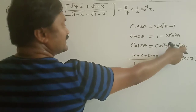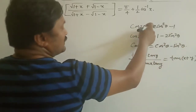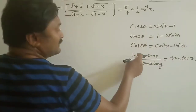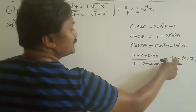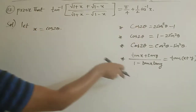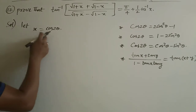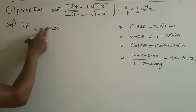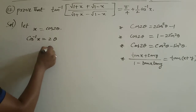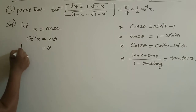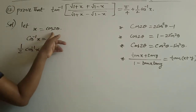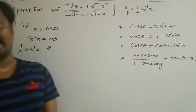Also remember: (tanx + tany)/(1 - tanx·tany) = tan(x+y). Now with x = cos2θ, we get cos⁻¹x = 2θ, so θ = ½cos⁻¹x. That is why we let x = cos2θ — whenever you get θ, you can write it as ½cos⁻¹x. Let's move on to the solution so you can understand clearly. Take the LHS first: tan⁻¹((√(1+x) + √(1-x)) / (√(1+x) - √(1-x))). Substitute x = cos2θ.